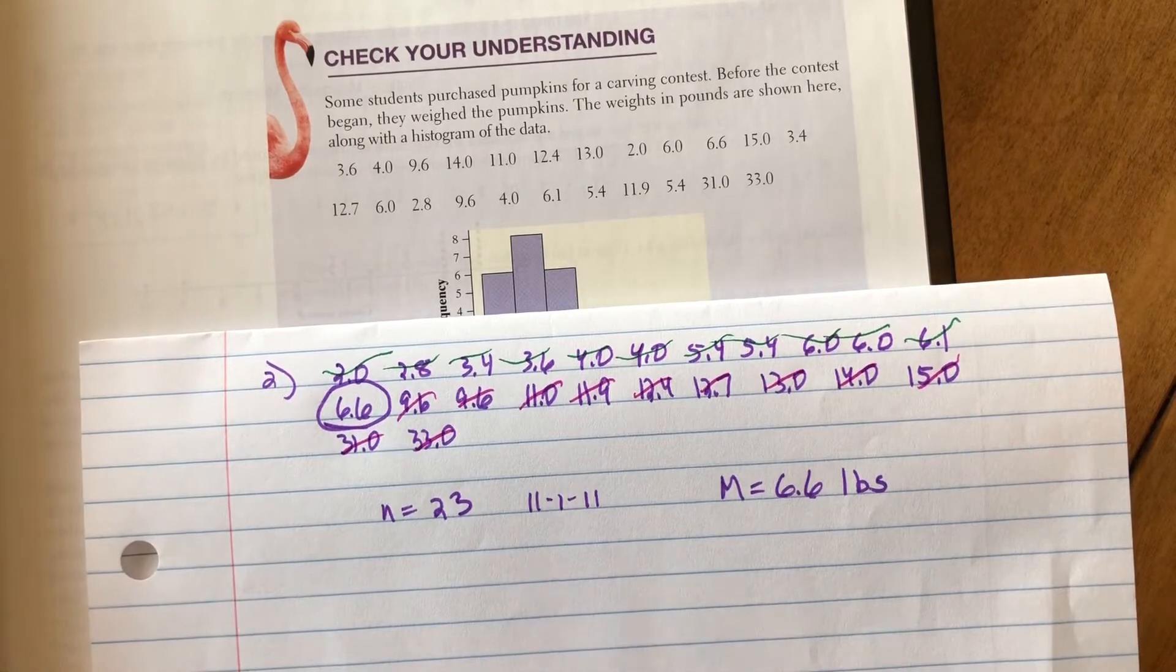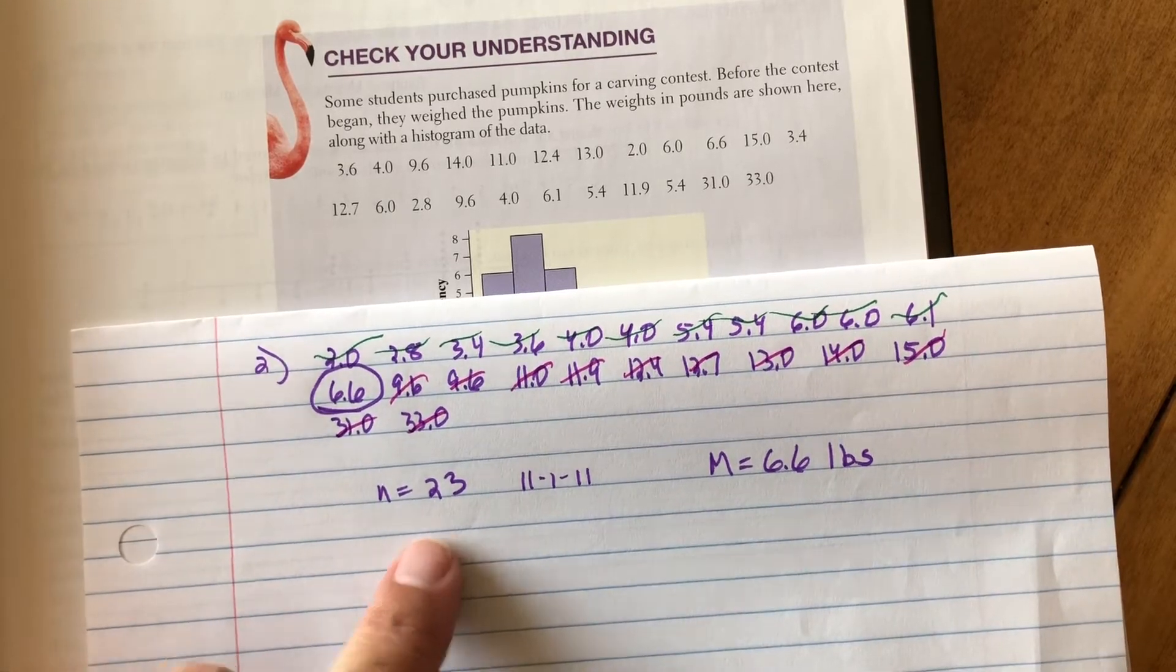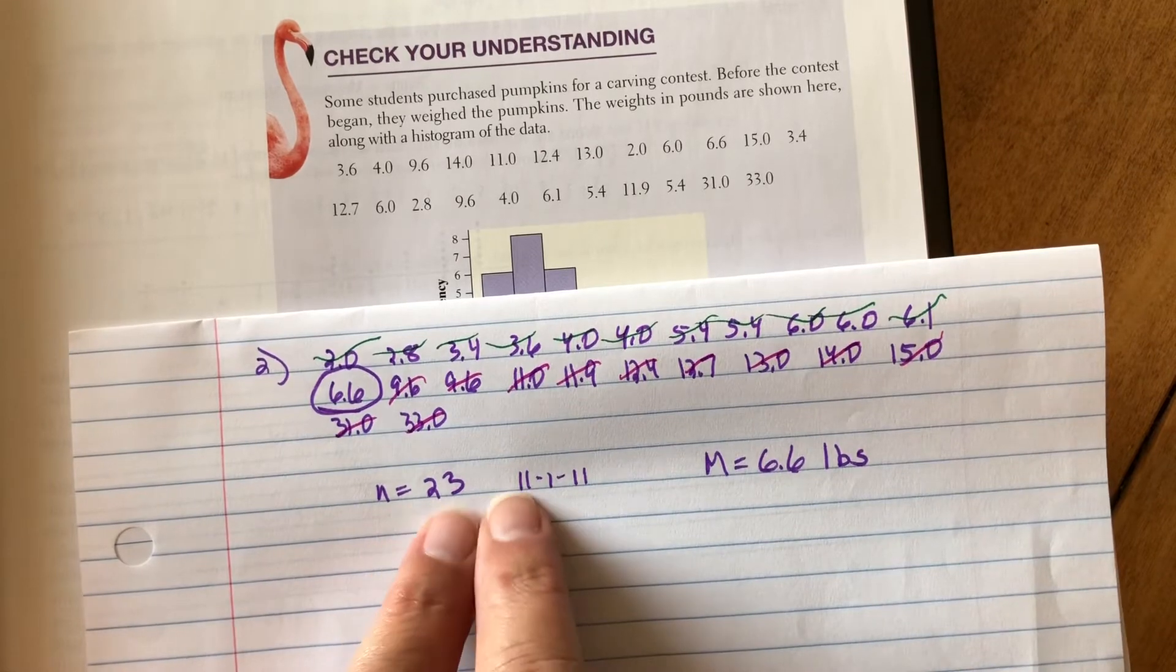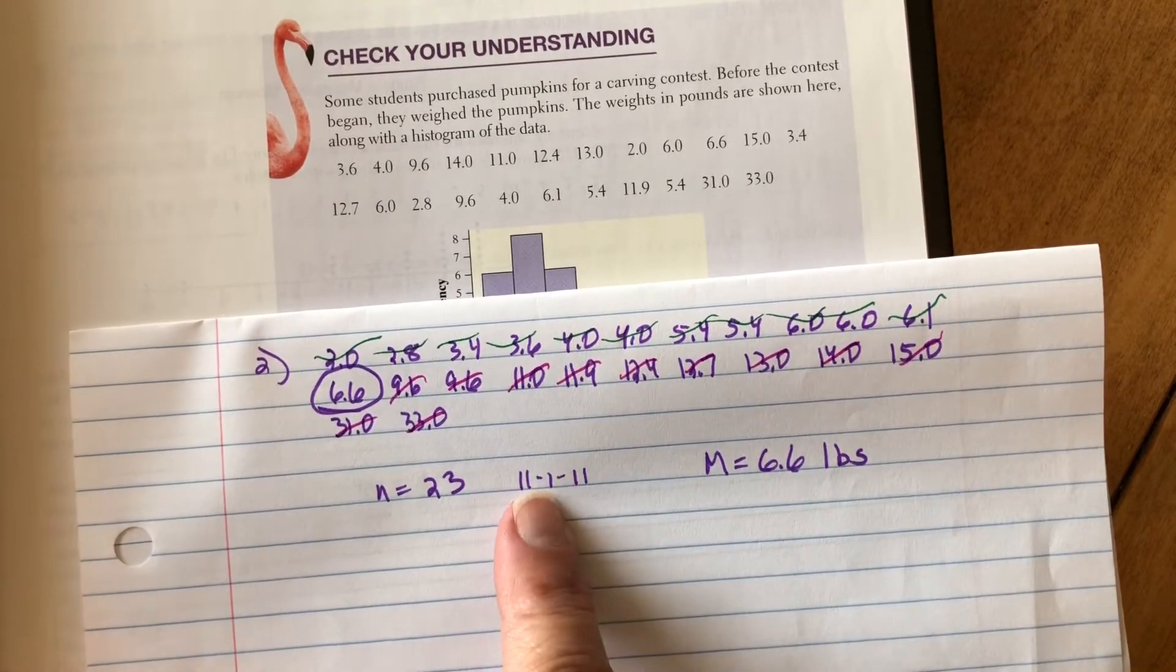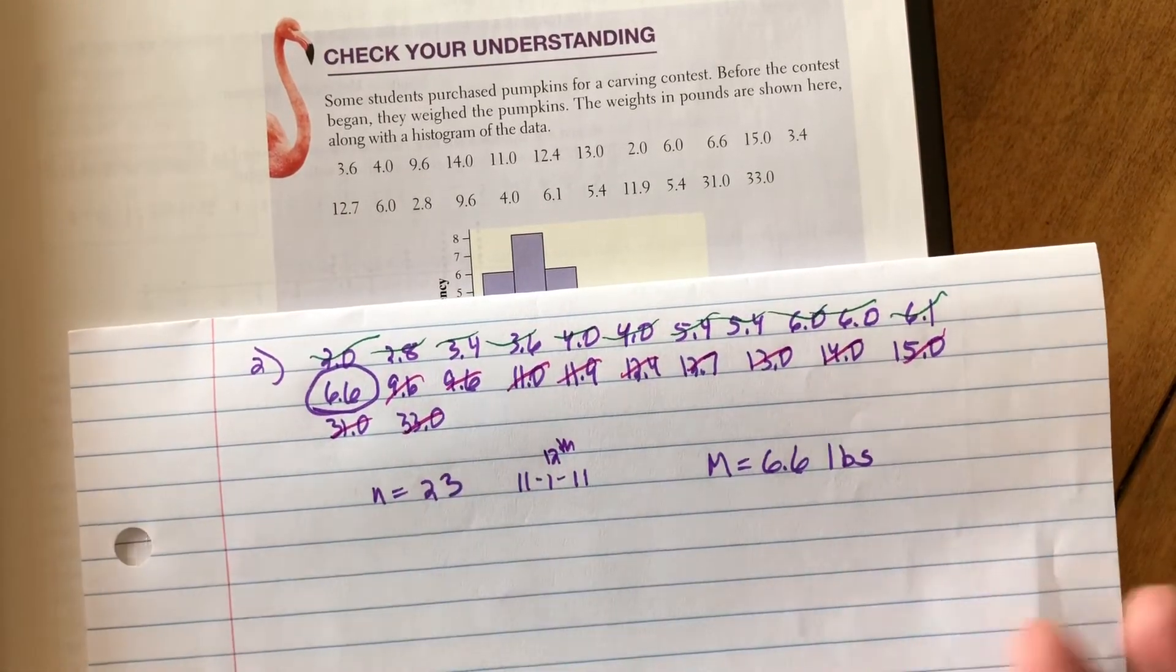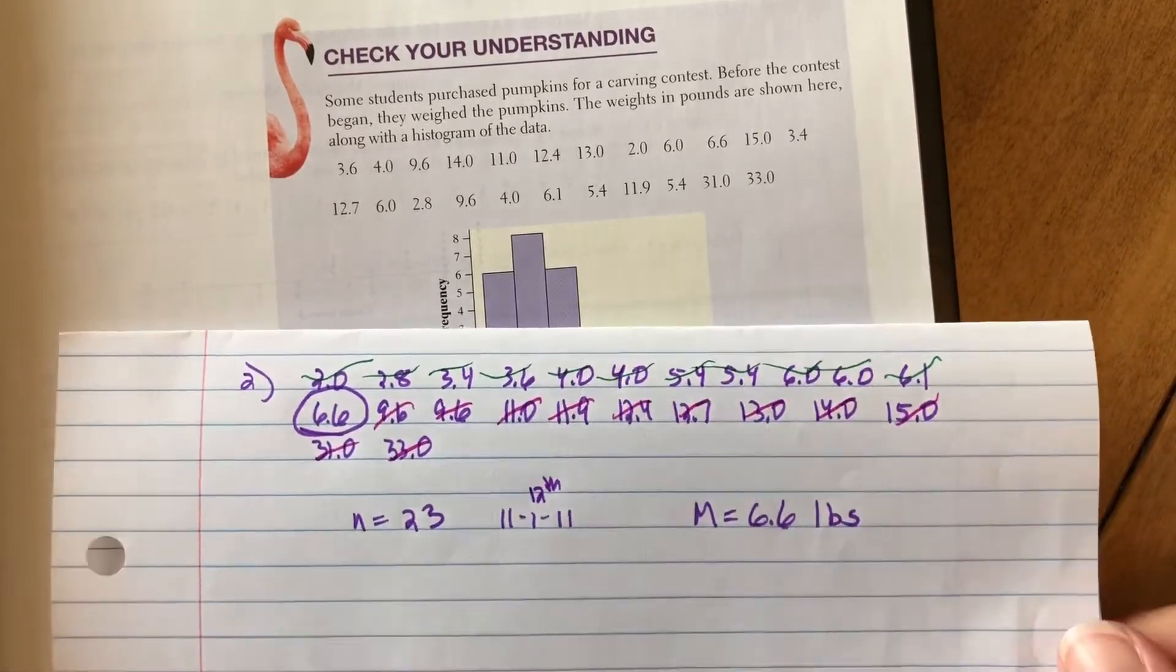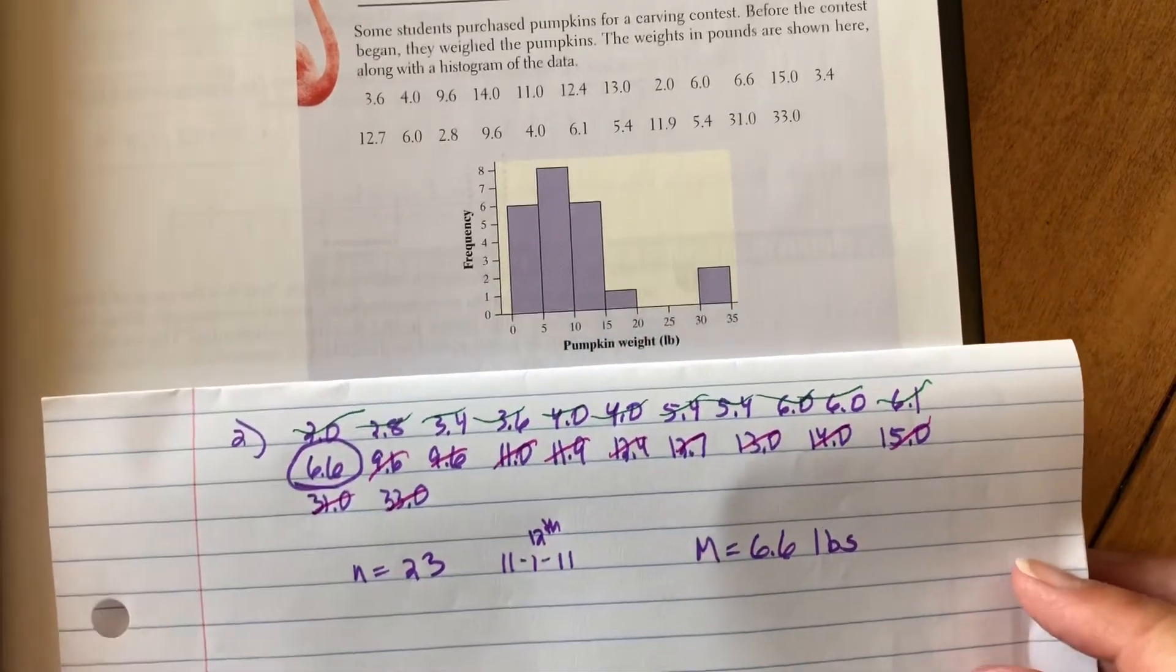But being able to count in is going to be more useful later on, especially when you're dealing with much larger data sets and like on a histogram or something like that. So, you know, the middle of 23, I'm going to count 11 in from both sides. So that's 22. And then the 12th one is the median. So my median is 6.6 pounds. While we're in here, while we've got everything in order, let's check it against our histogram just for the fun of it.